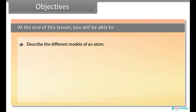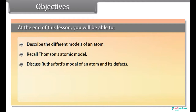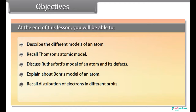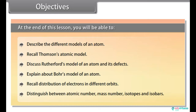Objectives: At the end of this lesson you will be able to describe the different models of an atom, recall Thomson's atomic model, discuss Rutherford's model of an atom and its defects, explain about Bohr's model of an atom, recall distribution of electrons in different orbits, and distinguish between atomic number, mass number, isotopes and isobars.